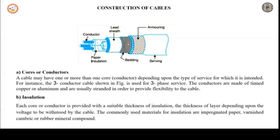Next is bedding. The metallic sheath is covered by another layer, which is called bedding. The bedding consists of paper tape compounded with a fibrous material like jute strands or hessian tape. The purpose of bedding is to protect the metallic sheath from corrosion and from mechanical injury resulting due to armoring.